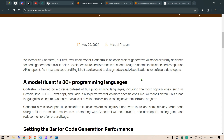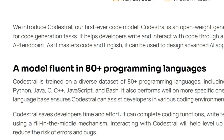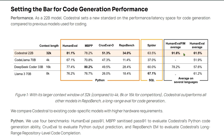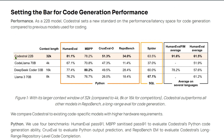This model is fluent in 80+ programming languages like Python, Java, C, C++, JavaScript, and Bash. Looking at the benchmarks compared with other coding models — Code Llama 70B, DeepSeek Coder 33B, and Llama 3 70B — we see strong scores: 81% on HumanEval in Python, 78.2% on MBPP, 51.3% on CRUXEval, and 34% on RepoBench. Except for MBPP where DeepSeek Coder 33B is highest.